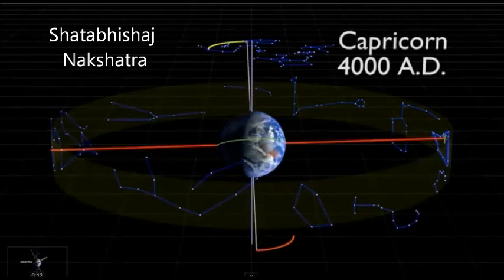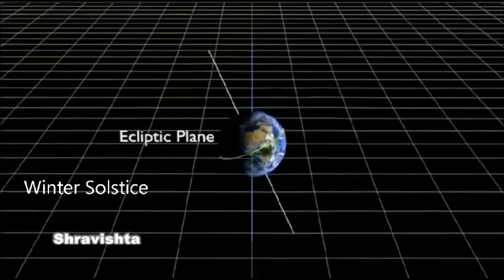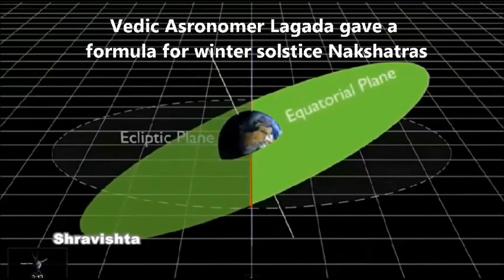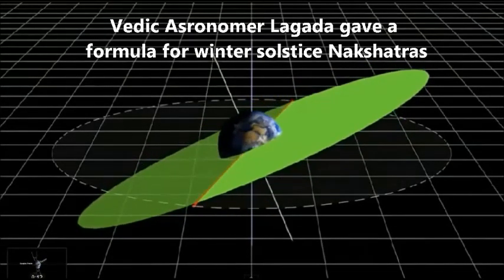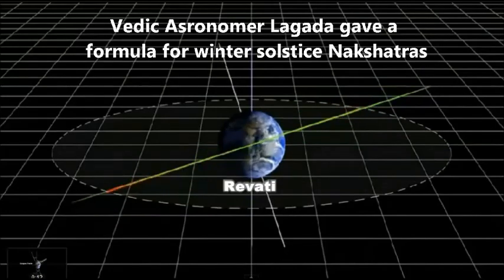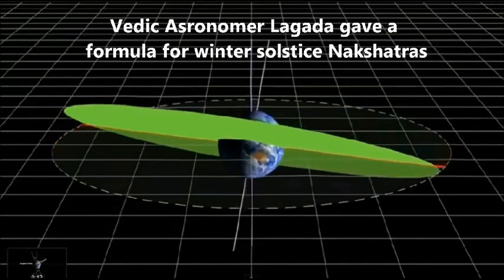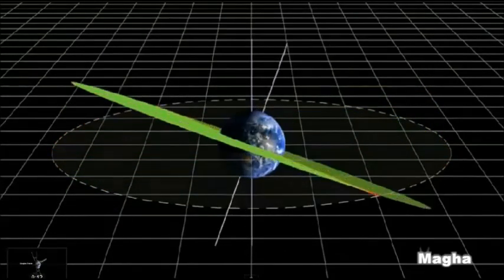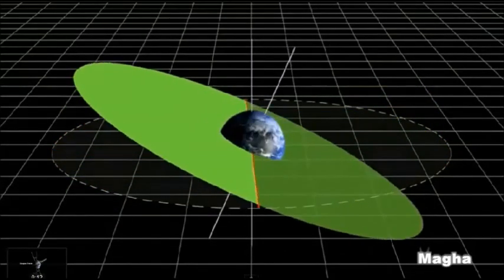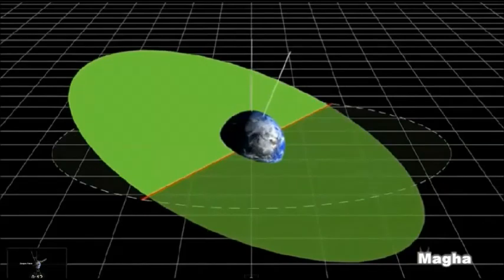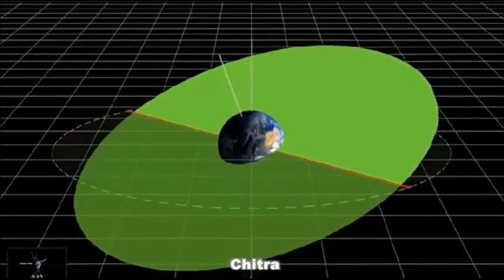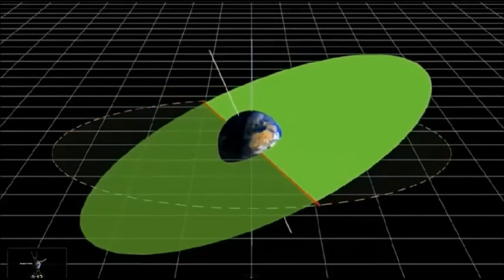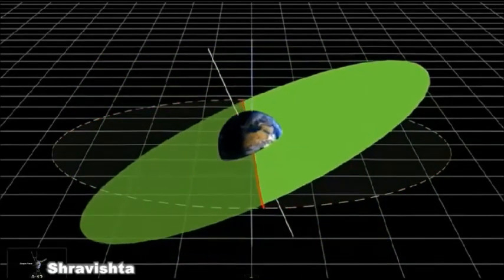Equinox position shifts to a new nakshatra every 1000 years. Scholars have dated the Vedic astronomy era by using a specific reference to a winter solstice in Jyotish texts, without a complete appreciation of cryptic codes related to nakshatras.